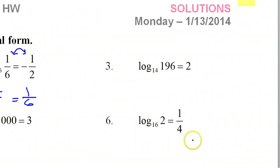Number 4. Start with the base. The base is 14. These two sort of switch places. So 14 squared is equal to 196.